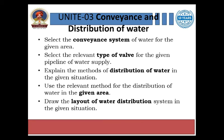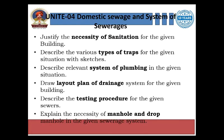Unit 3 will discuss the conveyance and distribution of water — the distribution system for any locality or city. In this unit we will discuss the conveyance system of water, types of pipes, distribution of water, relevant methods of distribution of water in a given area, and drawing the layout of the water distribution system for a given situation.